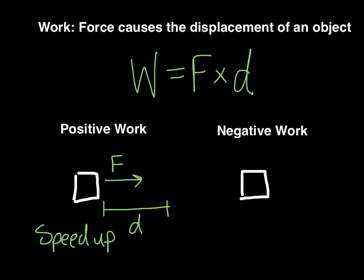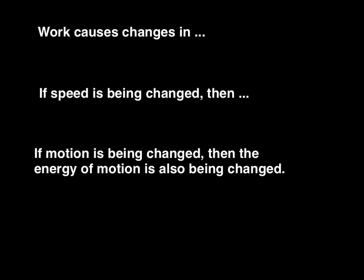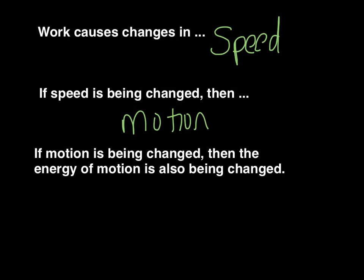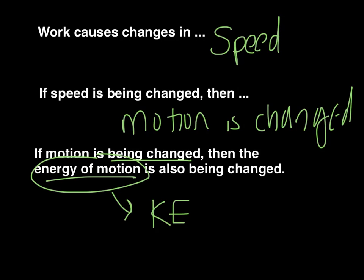We also talked about negative work, which means the force is acting in the opposite direction of the displacement — the way the object is already moving — and in that case the force slows the object down. Getting back to that point: work causes a change in speed, and if speed is being changed, then motion is being changed. If motion is being changed, then the energy of motion is also being changed. Energy of motion is kinetic energy, so work is related to kinetic energy — when kinetic energy changes, we have work.